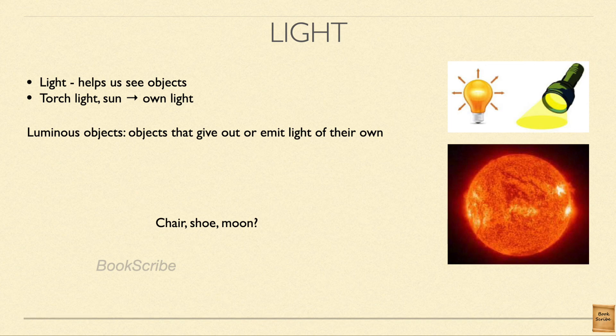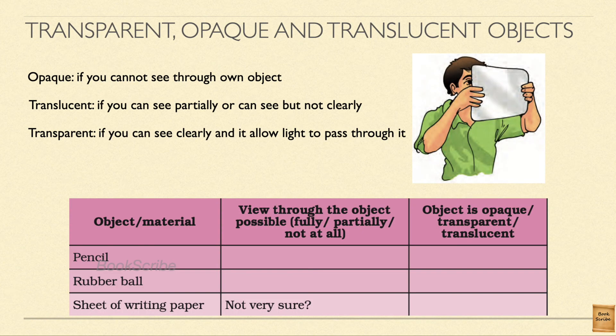What about a chair, a painting on your wall, or a shoe — are they luminous? Earlier in chapter 4, we read about opaque, transparent, and translucent objects. Objects through which you cannot see the other side are called opaque. If through an object you can see partially — not clearly, but some light passes — it is called translucent. An example would be oil paper, where the image is blurred but some light comes through.